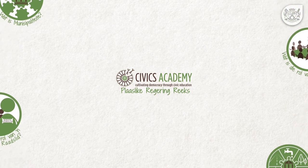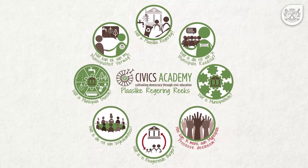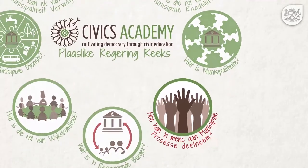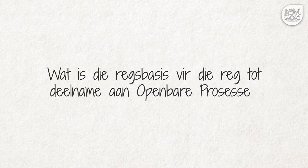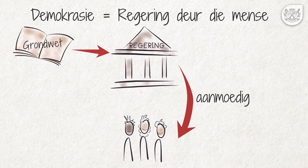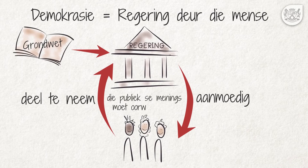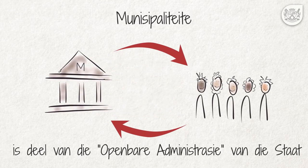Welcome to the Civics Academy's Plaaslike Regerings-reeks. Here are the videos to explain how Plaaslike Regering works. What is the rights basis for the right to deelname on openbare processes? The word democracy means a government by the people. Therefore, it is grounded that the Openbare Administrasie must encourage openbare deelname and the public meetings must be able to move. The city is part of the Openbare Administrasie as part of the state. One of the sleutelfunctions of municipalities is to understand the importance of municipalities in local government.